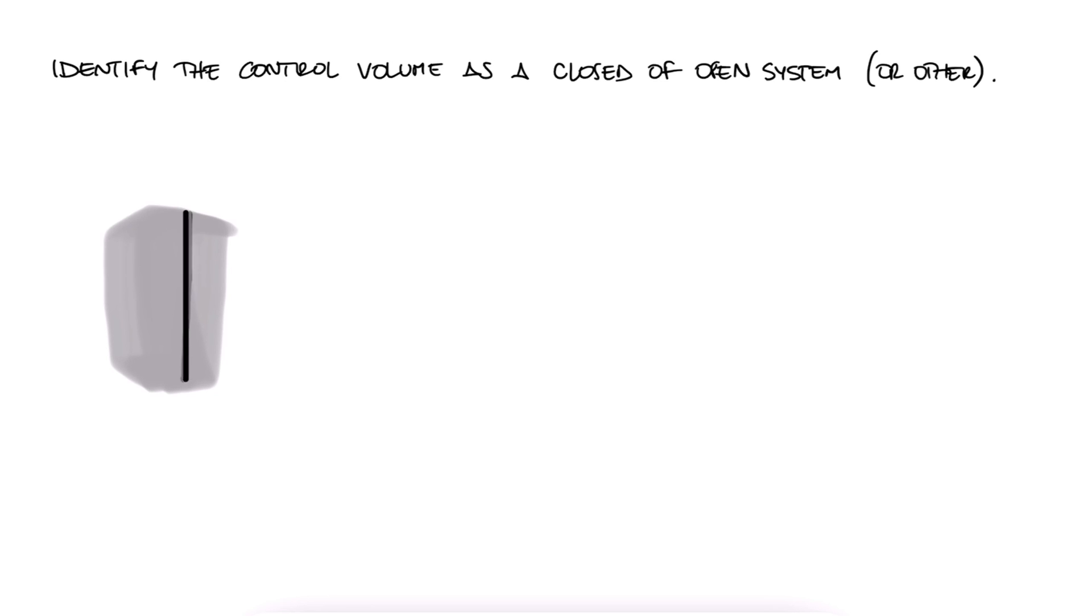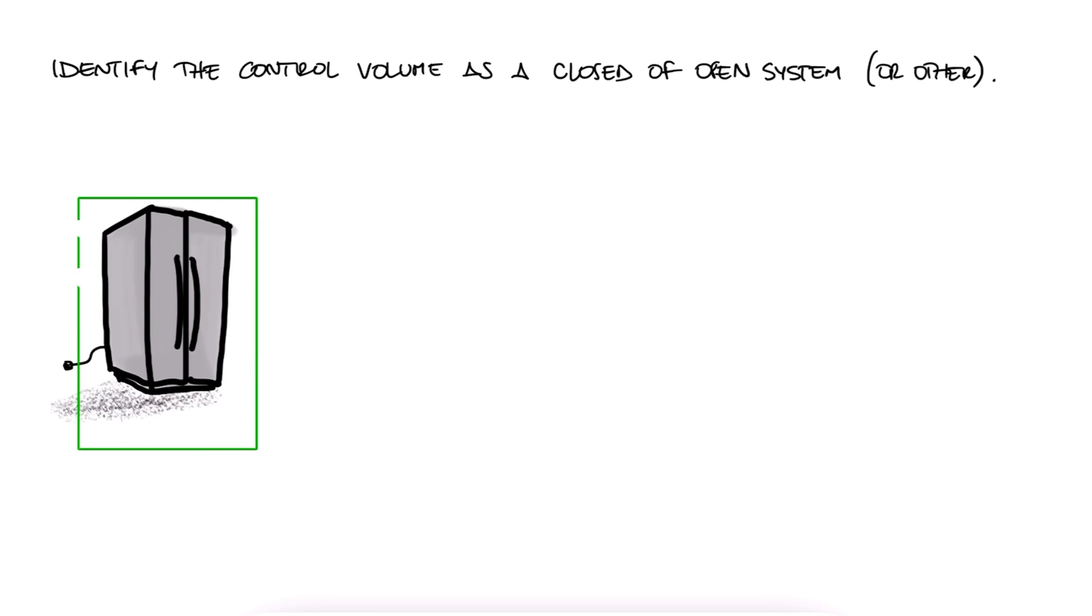If we put a control volume outside a closed fridge that remains completely isolated, what type of system is that? Closed? Open? Isolated? Well, there is energy coming into the fridge in the form of electricity. One of the boundaries of the control volume we selected is allowing energy to come into our system.